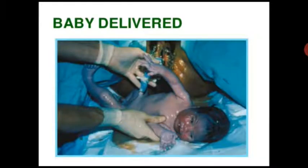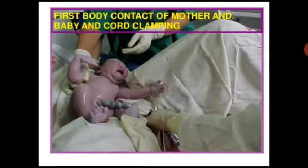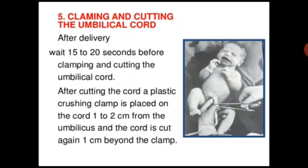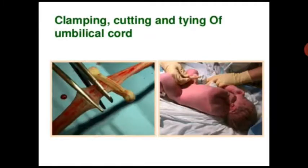Baby delivered. First contact between mother and baby, then cord clamping. Clamping and cutting the umbilical cord: after delivery, wait 15 to 20 seconds before clamping and cutting the umbilical cord. After cutting the cord, a plastic clamp is placed 1 to 2 cm from the umbilicus, and the cord is cut again 1 cm beyond the clamp.